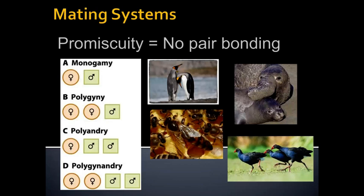With all forms of sexual reproduction you need two parents, and there are different mating systems that can be applied to different species. These are the general rules, and sometimes species will do more than one or have a mix, but for our purposes we're going to look at examples where these are very clear and easy to tell. There are five different mating systems.